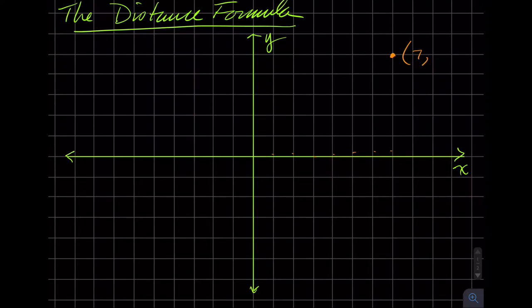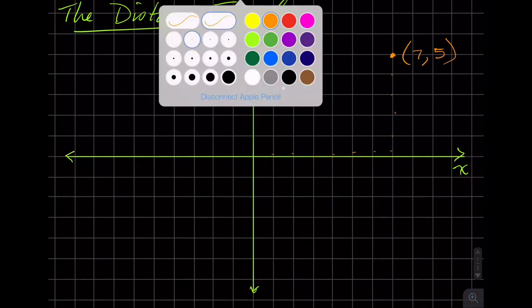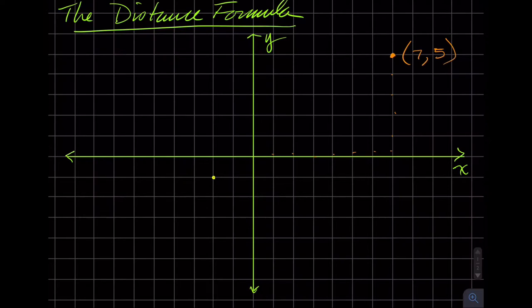...units up in the vertical direction. And let's pick another point. Let's use yellow. Let's put this guy down here and that one is (-2, -1).